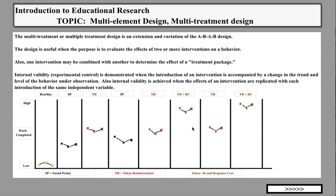We also have a package: token reinforcement plus response cost, followed by back to token reinforcement, and then token reinforcement plus response cost again. Here's how the design works: baseline data was taken, then data on just social praise — it moved up in a therapeutic direction to about 30%. Token reinforcement moved even higher, about 50%. Back to social praise, it dropped to about that level, still better than baseline. Then back to token reinforcement, stabilizing about where the first token reinforcement phase was.